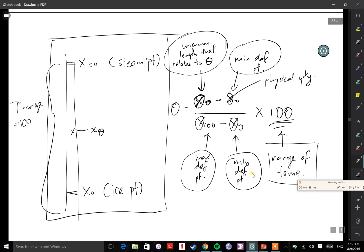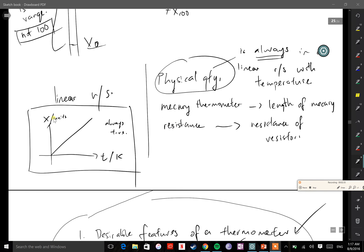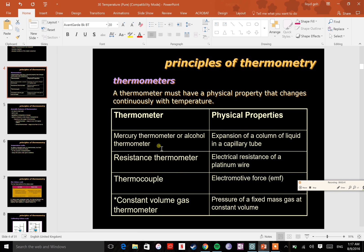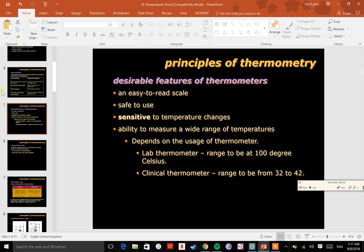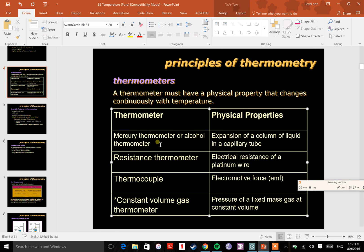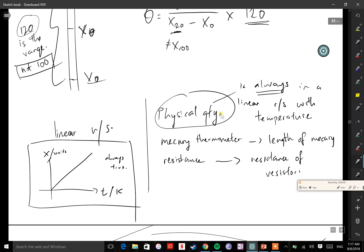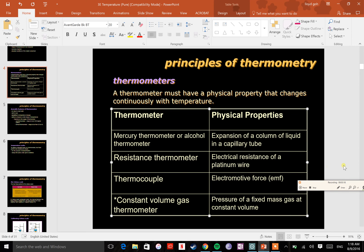However, we dealt with another question where you were given x₁₂₀ and x₀, and you'll note the range is now 120. So the formula has to change - it's no longer times 100, but times 120. And this is no longer x₁₀₀, but x₁₂₀. The good thing about thermometers is that x here is an unknown length that relates to theta. Basically, x is a physical quantity. It can be anything. As we see on the slide, which is on your worksheet, there are four different types of thermometers.